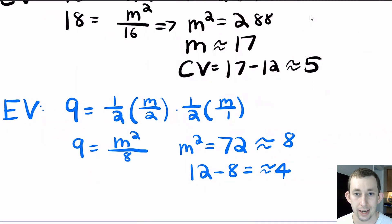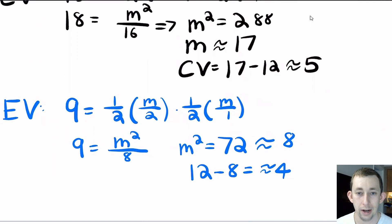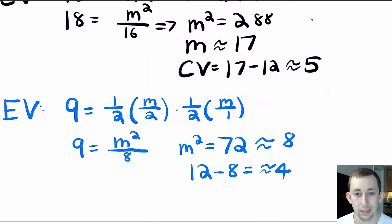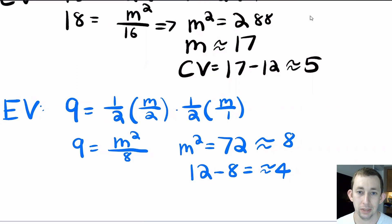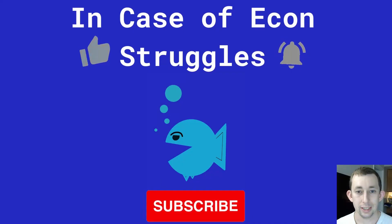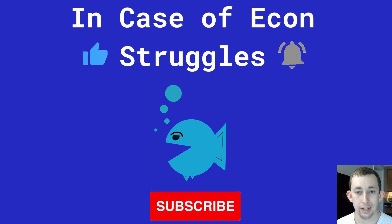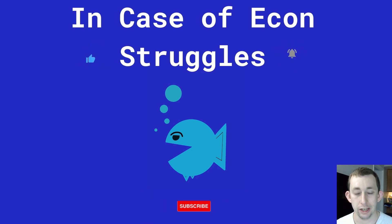With both compensating and equivalent variation, you find your optimal bundles and the utility of those bundles before and after the price change. For compensating variation, find how to get to your old utility using the new prices. For equivalent variation, find how to get to your new utility using the old prices. Calculate the difference between what you have and what you'd need — that's the dollar impact of the price change on welfare. If this was helpful, like and subscribe, and we'll see you next time.